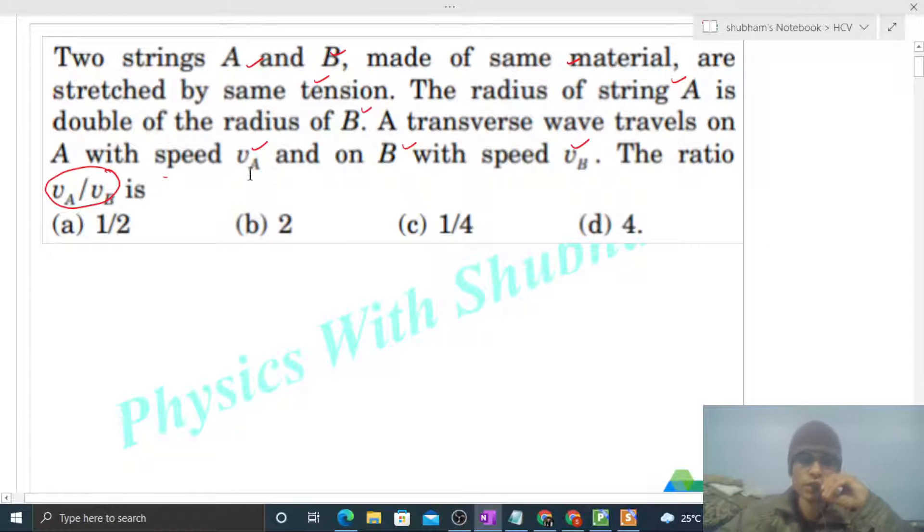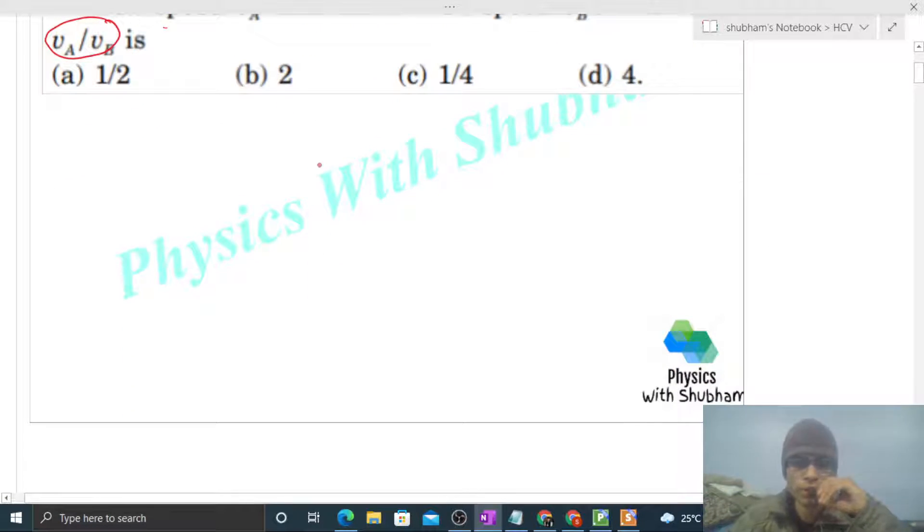How to find the speed of a transverse wave in any string? Let's say we have a string with length L, radius R, mass M, and tension T. Then speed of transverse wave will be square root of T divided by μ.